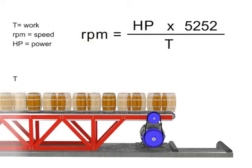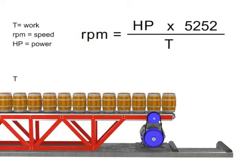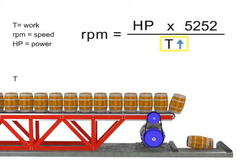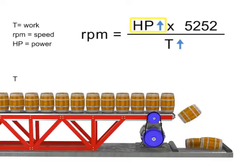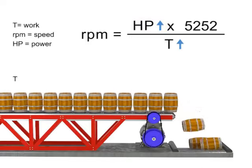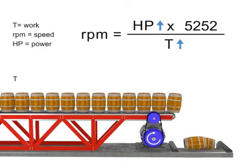Let's say we want production to increase but the speed of the conveyor to remain constant. If torque increases, horsepower also increases to compensate. This means a more powerful motor is needed to produce more torque at the same speed.